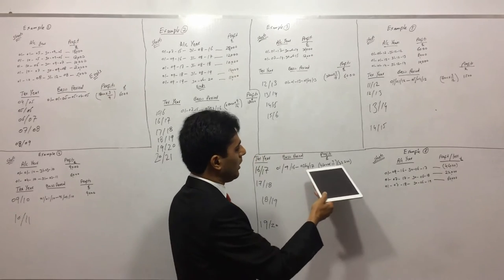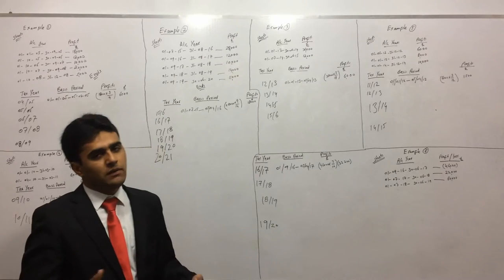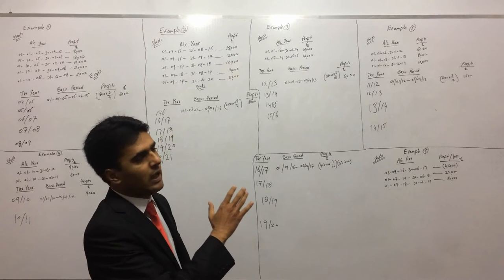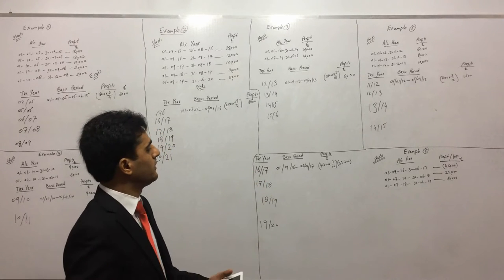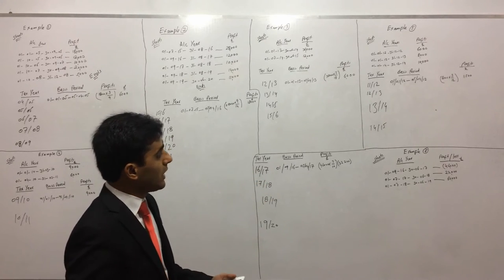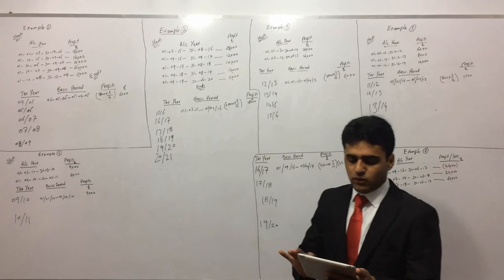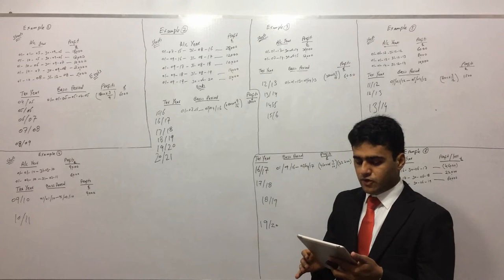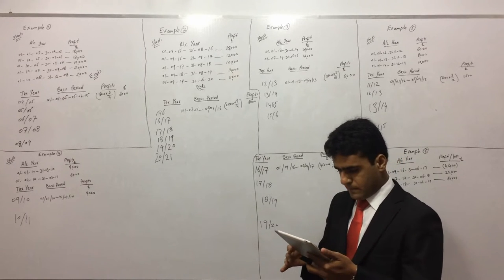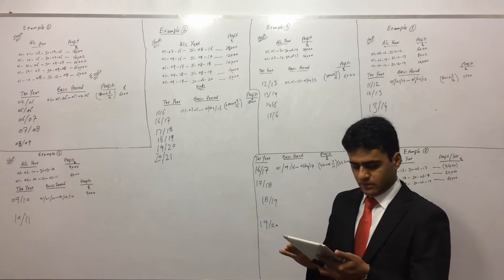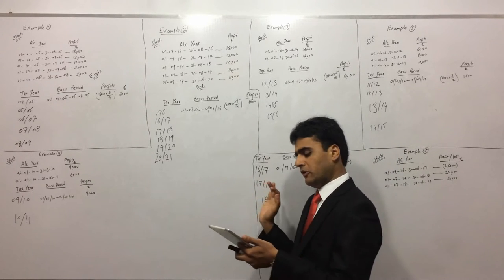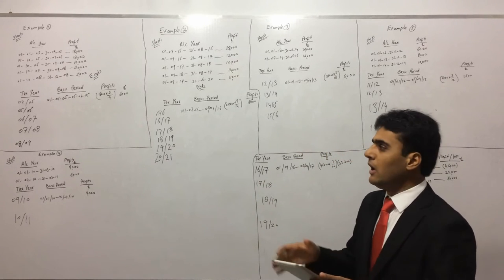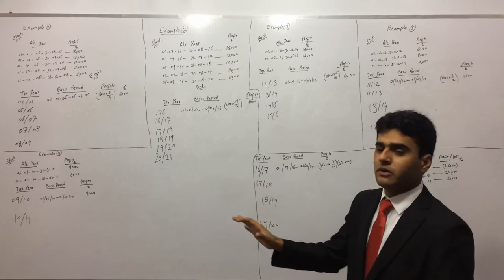Now, even if it is a loss, our first accounting period will always start from the start of the trade and end on 5th of April next year. We've done the first basis period. Now, could you please move to our notes on page 28. We have already seen the first basis period — it is the easiest one. Now comes the difficult one: the second basis period.